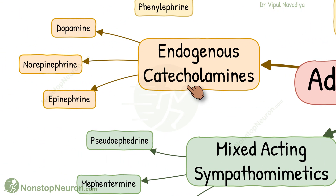Endogenous catecholamines include epinephrine, norepinephrine, and dopamine.